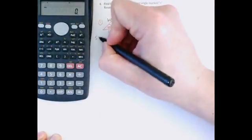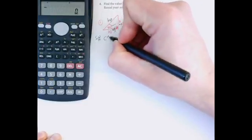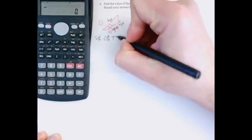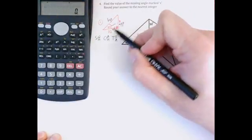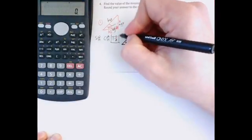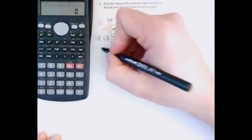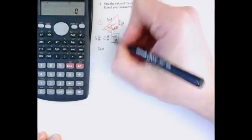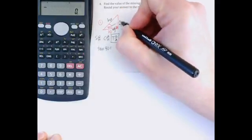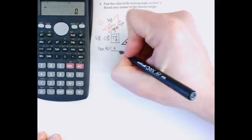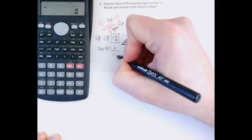That means out of SOH, CAH, and TOA, I want to work with the O and the A, opposite and adjacent. So that's going to be TOA. To find this side length now, all I need to do is write out tan of the angle, which is 40 degrees, equals opposite X divided by adjacent, which is 10.